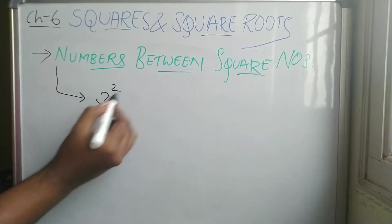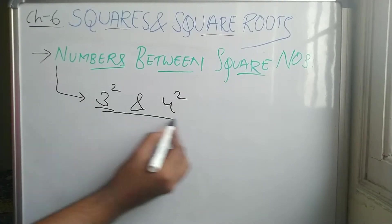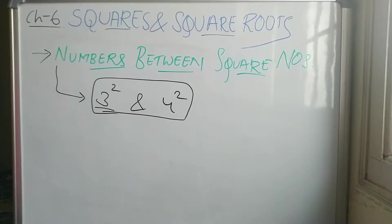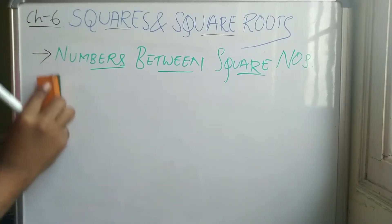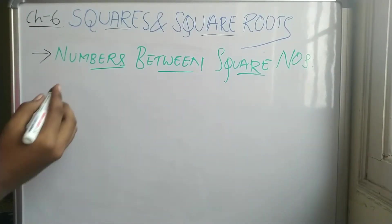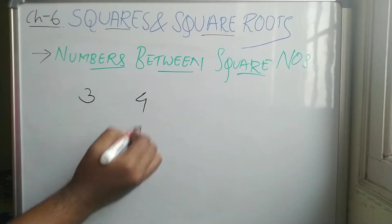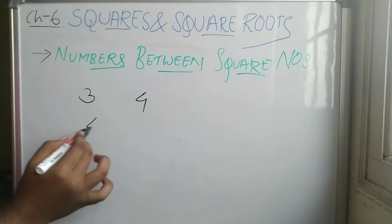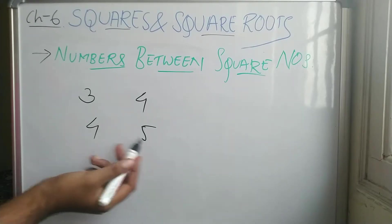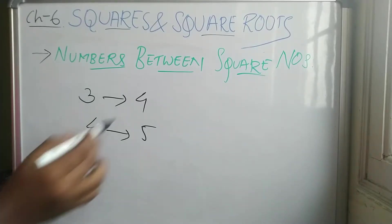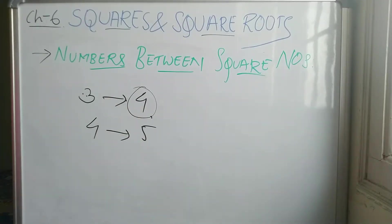For example, between 3 squared and 4 squared, how many numbers are there? Consecutive numbers means one number after another — so after 3 comes 4, after 4 comes 5, and so on. The previous number of 4 is 3, the next is 4, like that.